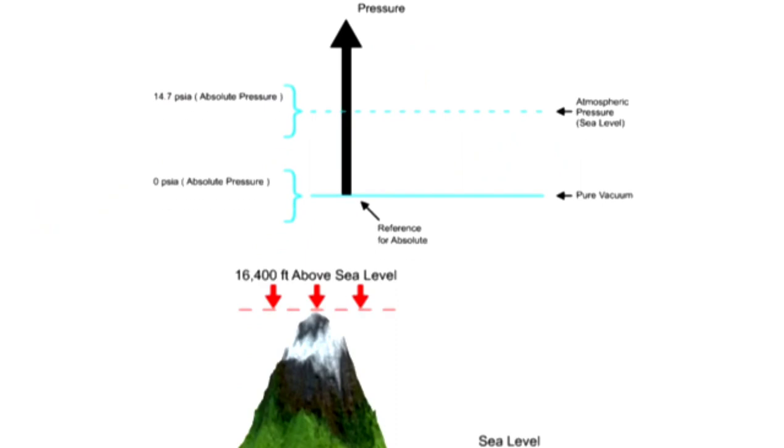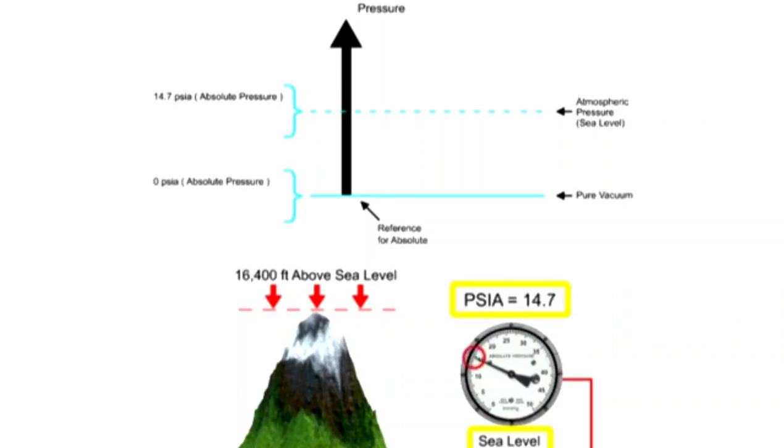The unit of measurement for absolute pressure is pounds per square inch absolute, abbreviated as PSIA. When the pressure sensing device is exposed to the atmosphere at sea level, the measurement scale will read 14.7 pounds per square inch.